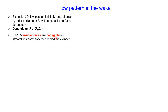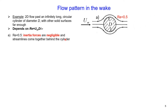When Reynolds number is small — less than 0.5 — inertia forces are negligible and viscous forces are significant. In this case, the streamlines come together behind the cylinder; they pass around the cylinder and rejoin behind it.